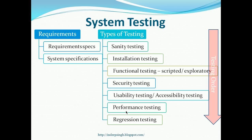Now let us look at system testing from a different angle. System testing involves testing of the requirements. There are two sets of requirements. One is the requirement specifications, which can be in the form of functional requirement specifications or user stories. Then there are system specifications, which are the design specifications that exist in design documents. So in system testing, both these sets of requirements have to be tested. The requirements specifications indicate the expected behavior of the system, and the system specifications indicate the design of the system. Both these things are tested in system testing.